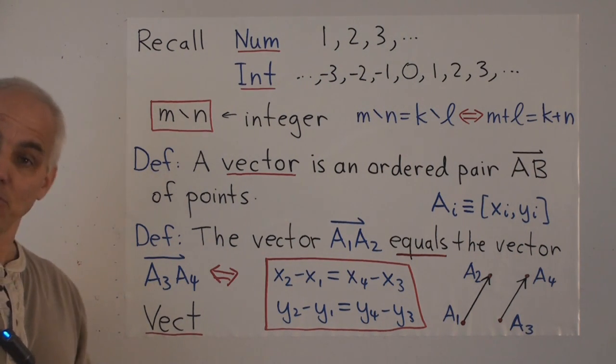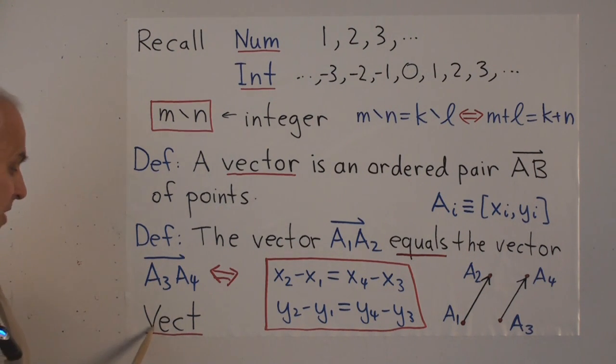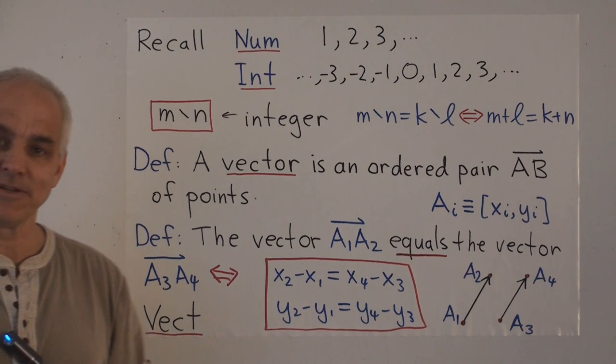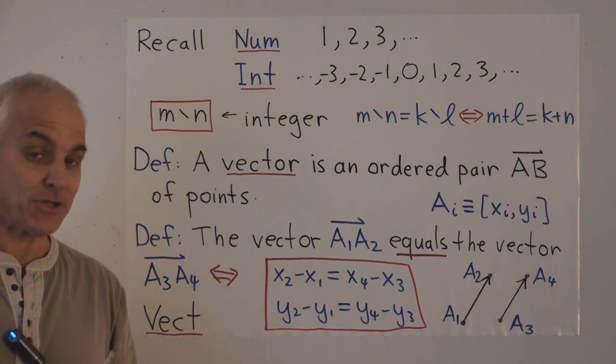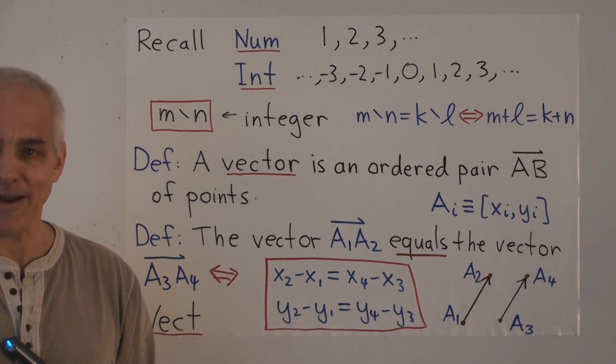And I give us a new type of mathematical object, which we'll denote by vect. That's a vector. It's not a point. It's not a number. It's not a circle. It's a new type of mathematical object.